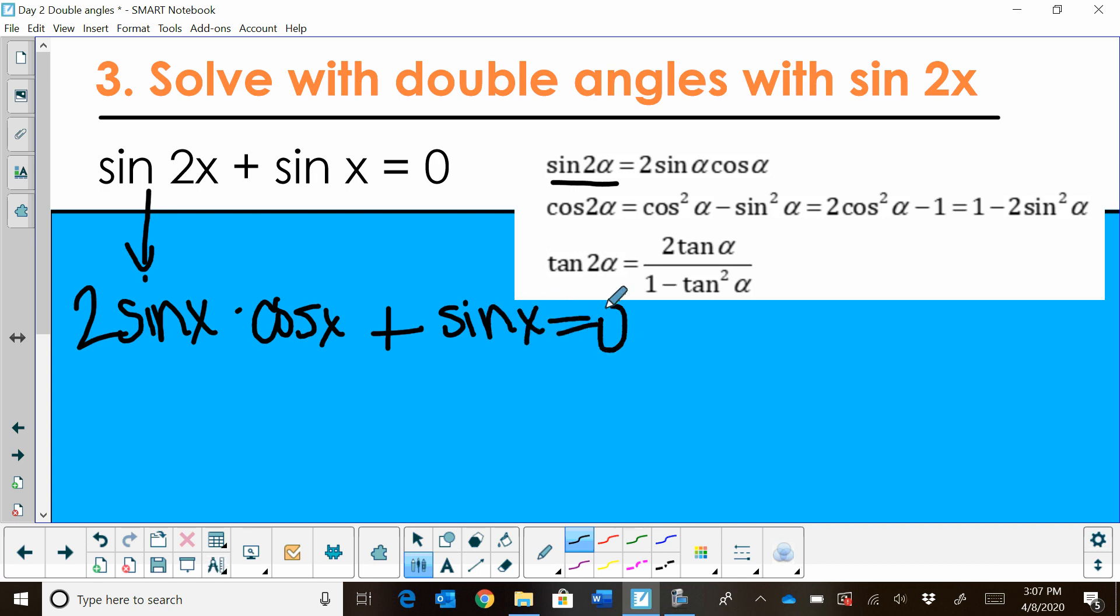So all I've done is a substitution for my double angle formula. Now I need to solve this. So the best way to solve this is just look at this one factors. Okay. So I have a common factor of sine x. So I'm going to factor out a sine x. And that leaves me with 2 cosine x plus 1.